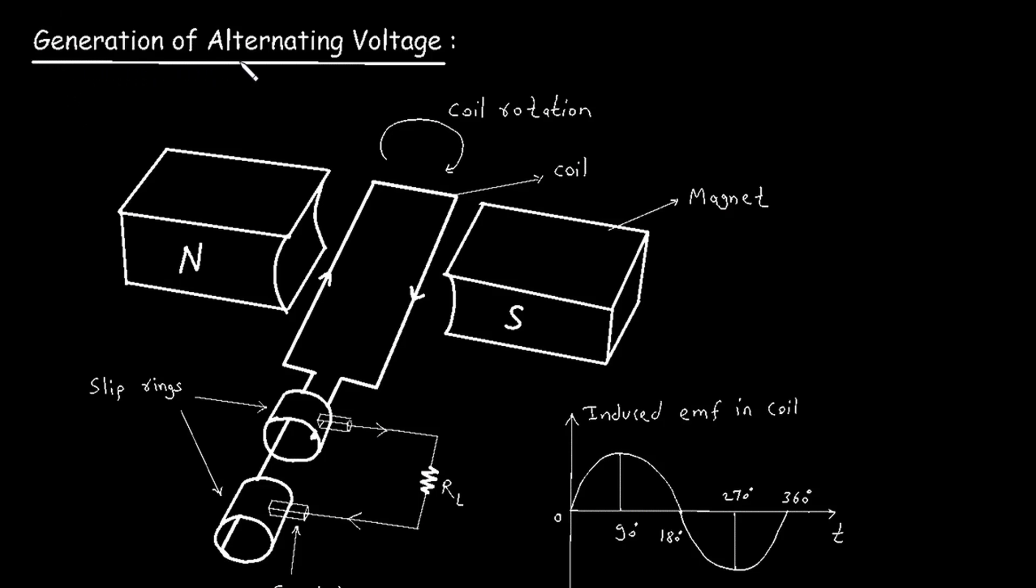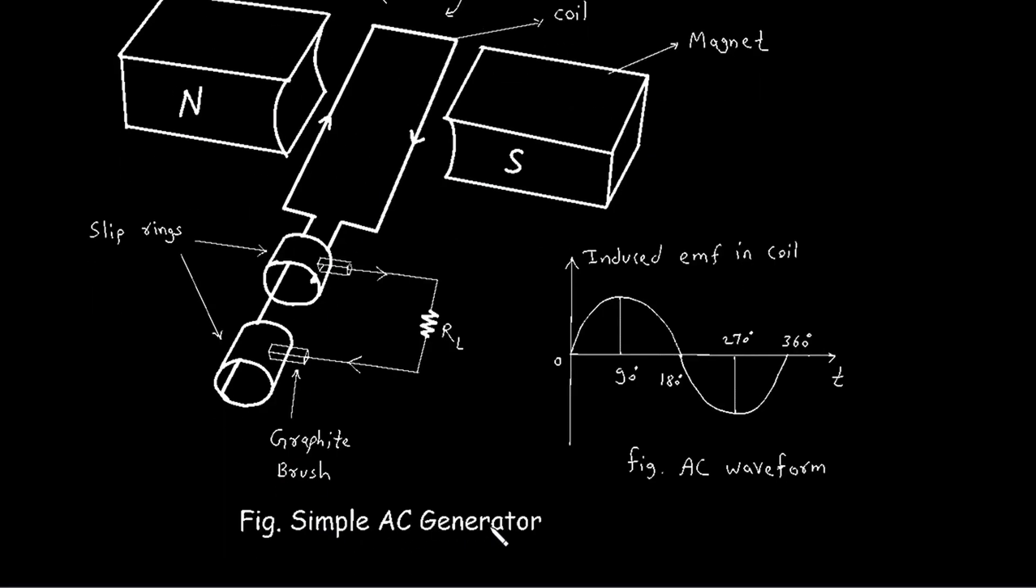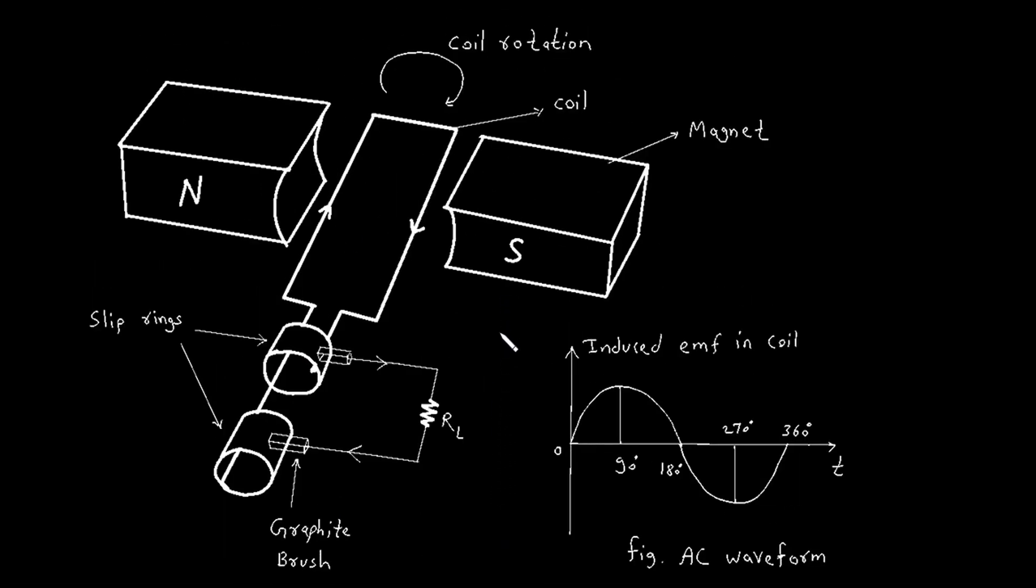Welcome to this tutorial on the generation of alternating voltage. In this video, we will explore how alternating current, or AC, is generated using a simple AC generator. We'll break down each component and explain how they work together to produce AC voltage.